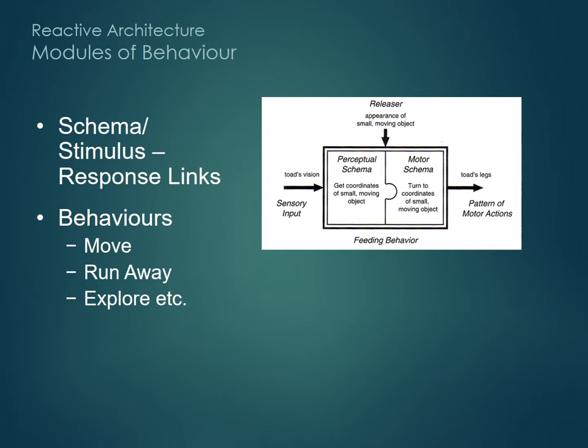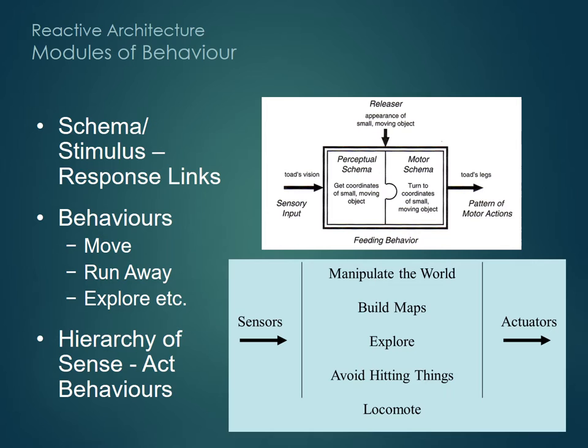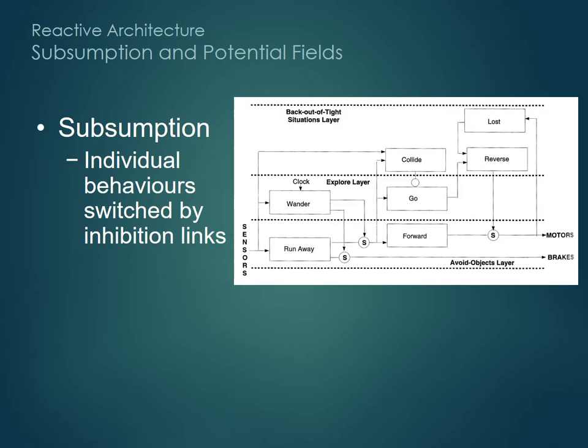The problem then is how to integrate all of these individual behaviours into a functional robot, and strategies to do this include subsumption and potential fields. In the subsumption approach, individual behaviours are switched on or suppressed by links from lower or higher behaviours in the hierarchy. In this example, a higher level behaviour like 'reverse' can take over from a lower level one, like 'move forwards', to avoid a possible collision.